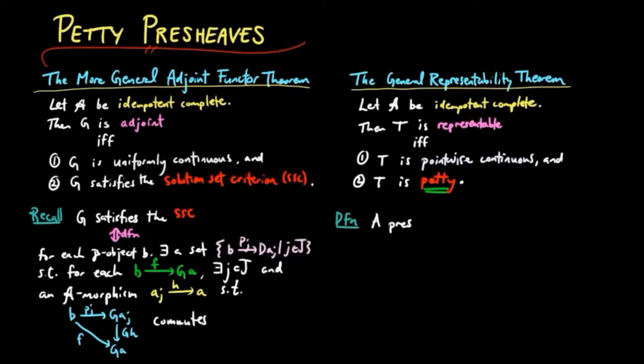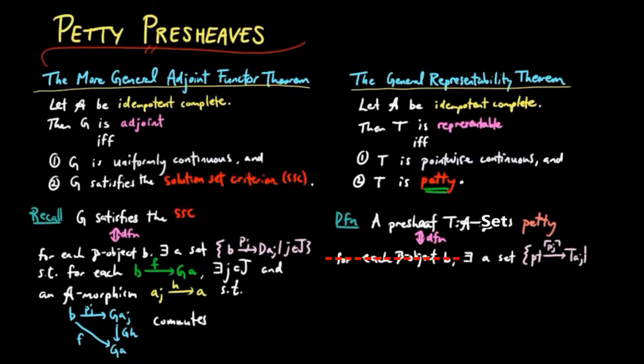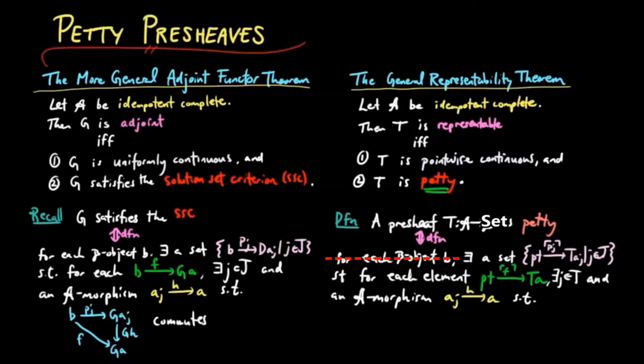In pre-sheave terms, we have T is petty if and only if there exists a set of elements P_J, such that for each element F in T(A), there exists an index little j in J and a morphism H from A_J to A, such that T(H)(P_J) equals F.